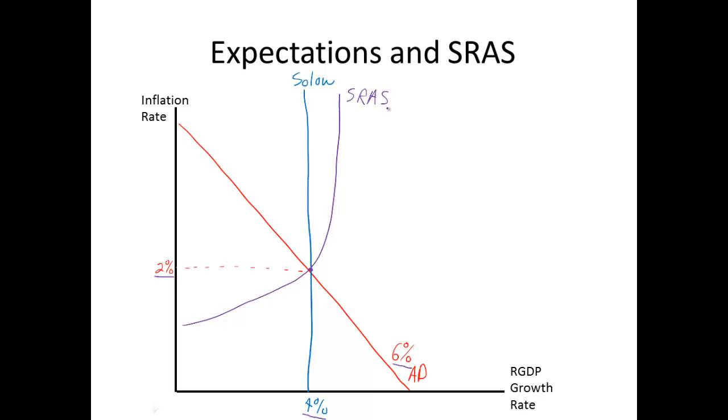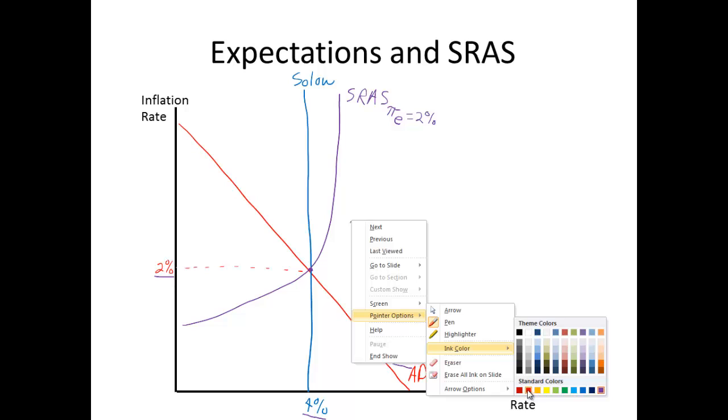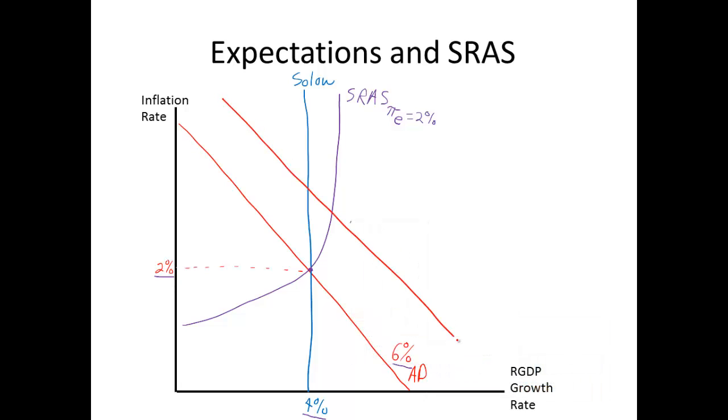5% inflation, 3% real growth adds up to 8% nominal growth. Let's put the experience of the 1970s in very simple terms into our dynamic aggregate demand supply model. The important thing to understand about short-run aggregate supply is that the level is based on what we call inflation expectations, and we'll label this pi E, pi E means inflation rate, and E for expectations of 2%.